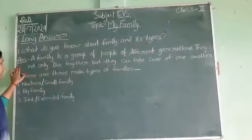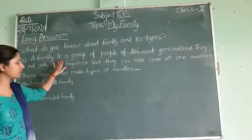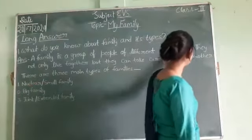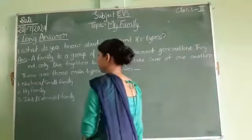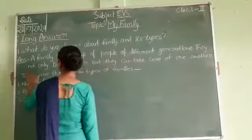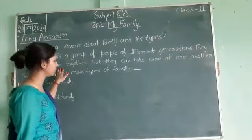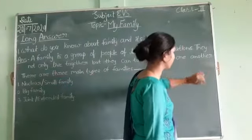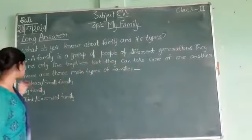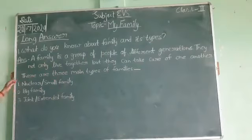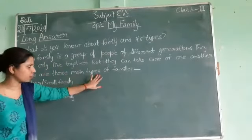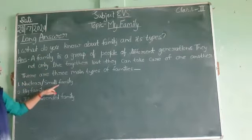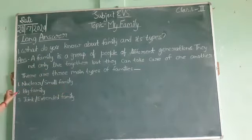A family is a group of people of different generations. They not only live together but they take care of one another. There are three main types of families. First, a small family. Second, a big family.